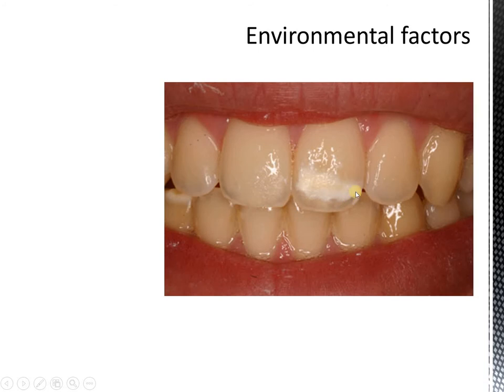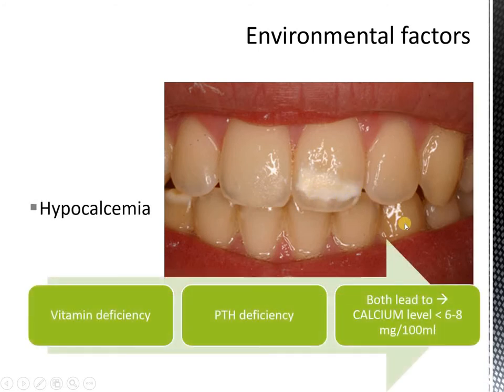Here you can see a whitish patch on top of the tooth. This could be a localized condition of hypocalcemia, which can be associated with vitamin deficiency or parathormone deficiency, both of which can lead to calcium levels less than 6 mg per 100 ml. The normal level is 9 to 11 mg per 100 ml. So locally, if in one particular tooth this kind of hypocalcified structure arises, the tooth will be weaker in that particular site.